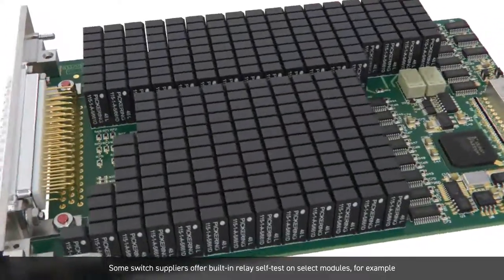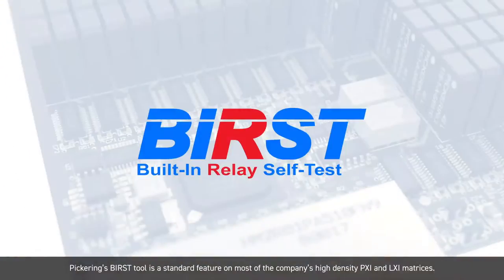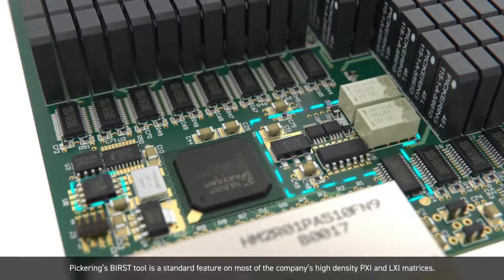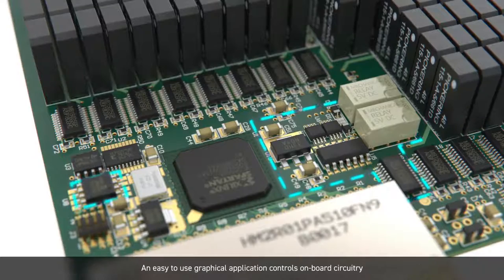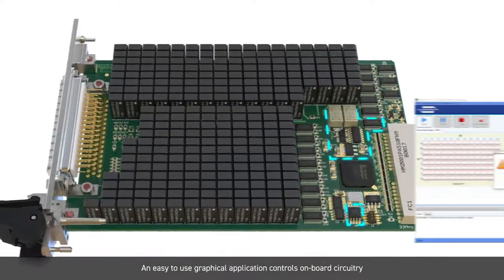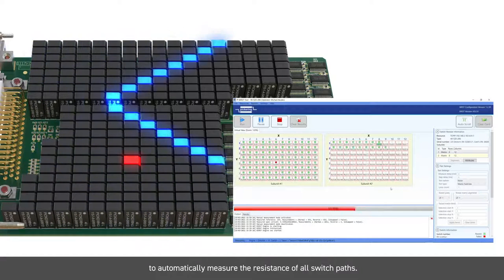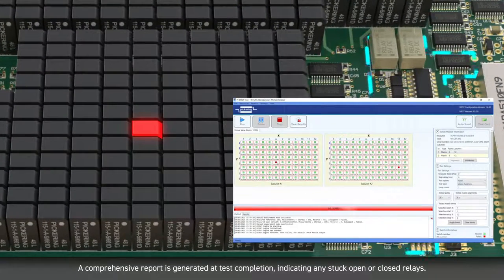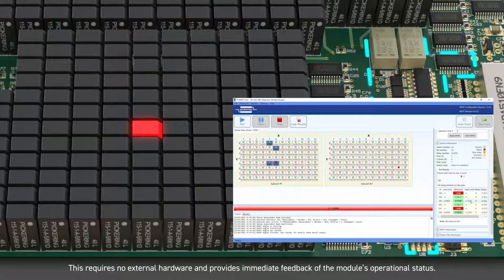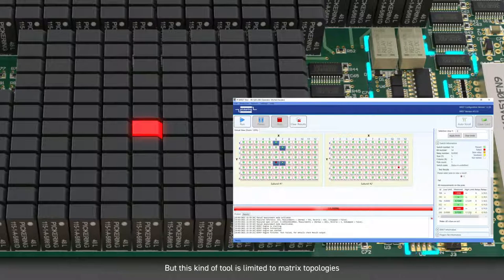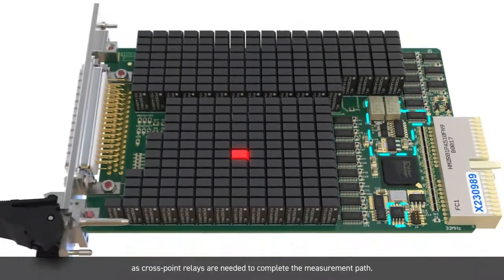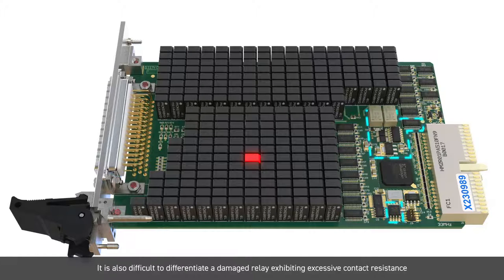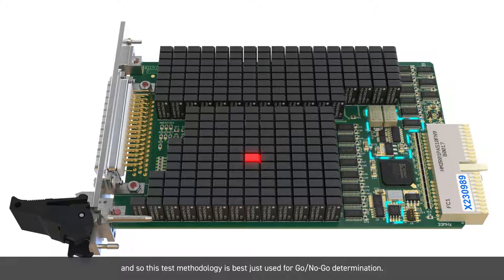Some switch suppliers offer built-in relay self-test on select modules. For example, Pickering's burst tool is a standard feature on most of the company's high-density PXI and LXI matrices. An easy-to-use graphical application controls onboard circuitry to automatically measure the resistance of all switch paths. A comprehensive report is generated at test completion, indicating any stuck open or closed relays. This requires no external hardware and provides immediate feedback of the module's operational status. But this kind of tool is limited to matrix topologies, as cross-point relays are needed to complete the measurement path. It is also difficult to differentiate a damaged relay exhibiting excessive contact resistance from other good relays in the same path, and so this test methodology is best used for go/no-go determination.